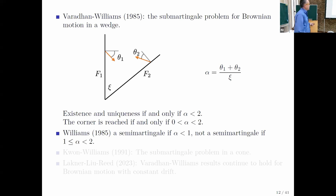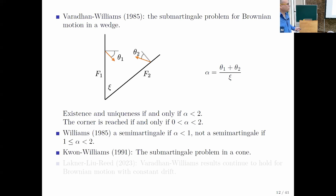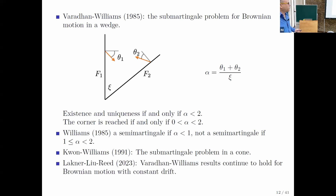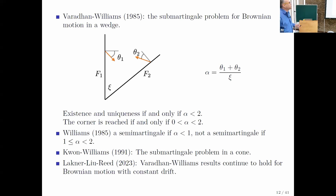A third respect: the resulting process RBM is a semi-martingale if alpha is less than 1, and it is not a semi-martingale if alpha is greater than 1. Kang and Williams extended the sub-martingale problem to a high-dimensional cone. Very recently, Lacker, Liu, and Reed extended the Varadhan-Williams results to the case where you also have a constant drift — this is very relevant to this talk.